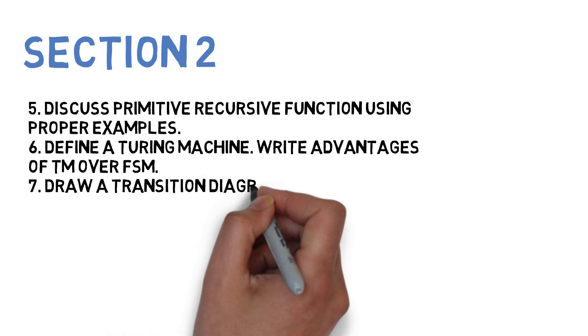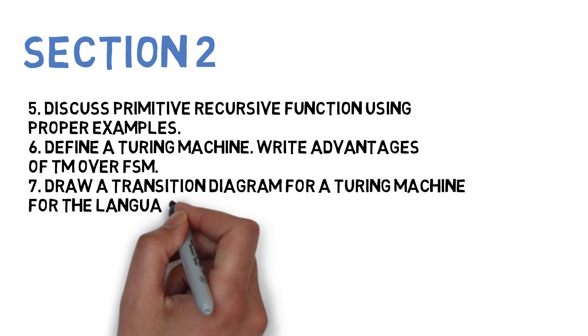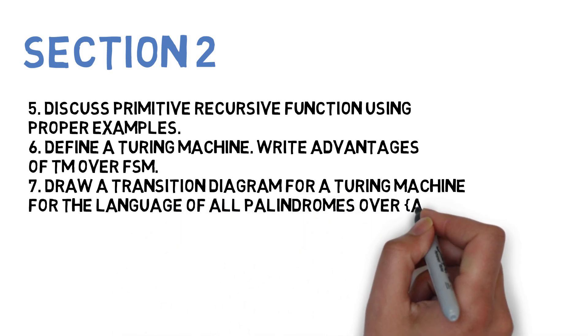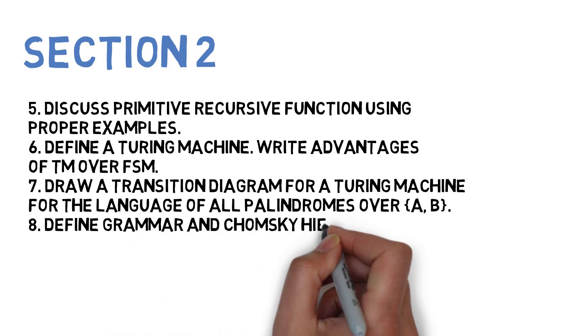Third question for Section 2 is draw a transition diagram for a Turing machine for a language of palindromes over a comma b. Eighth question is define grammar or Chomsky hierarchy. These four questions you'll be doing for Section 2.